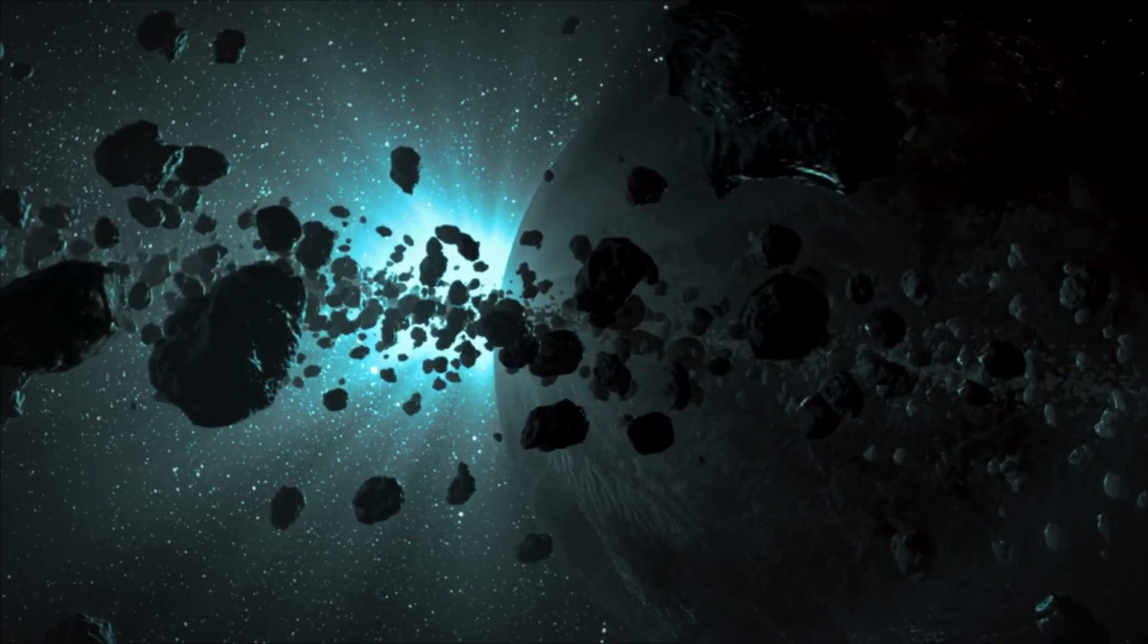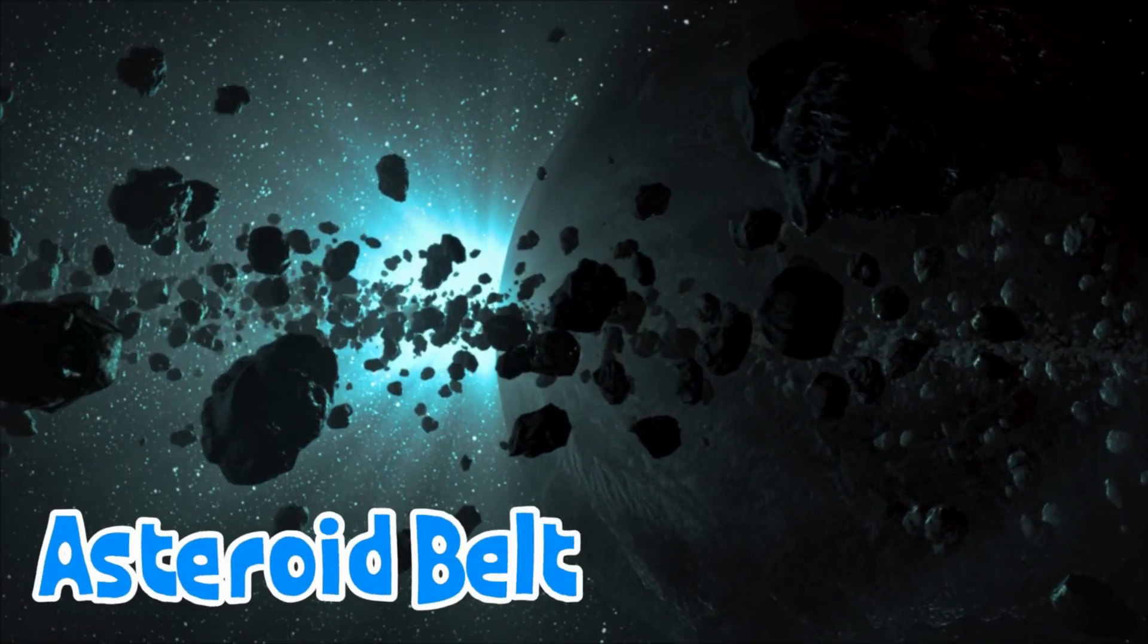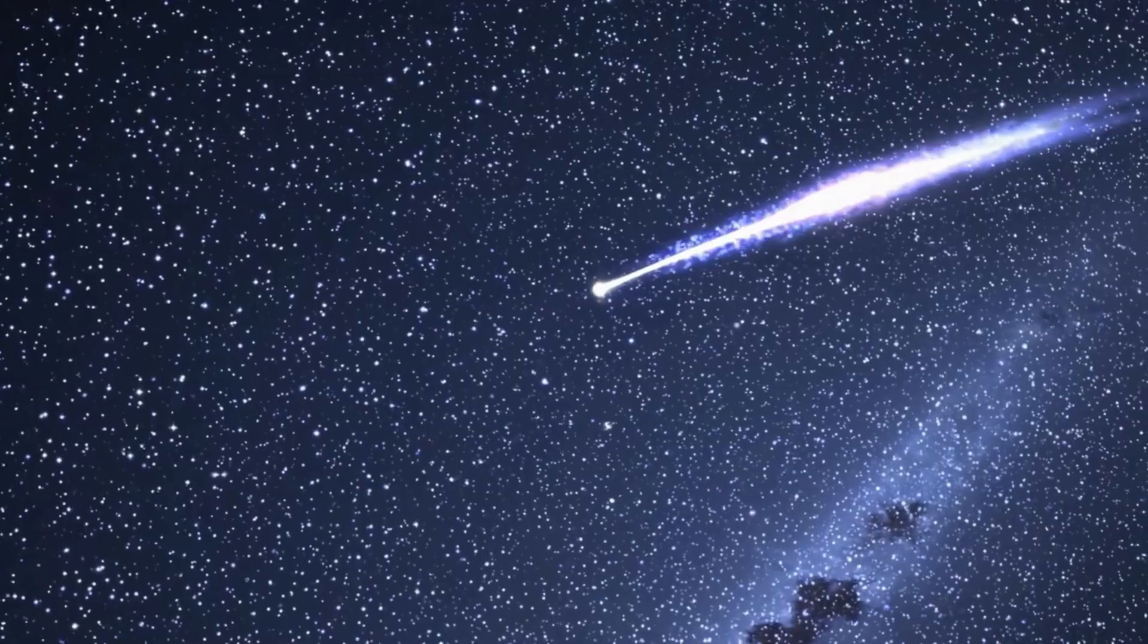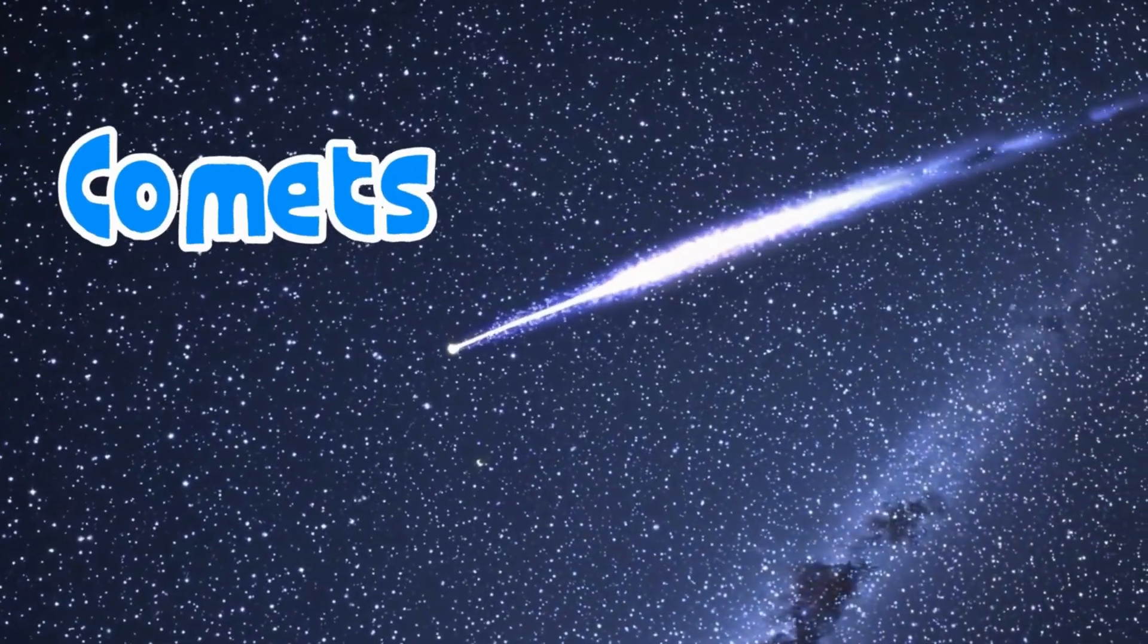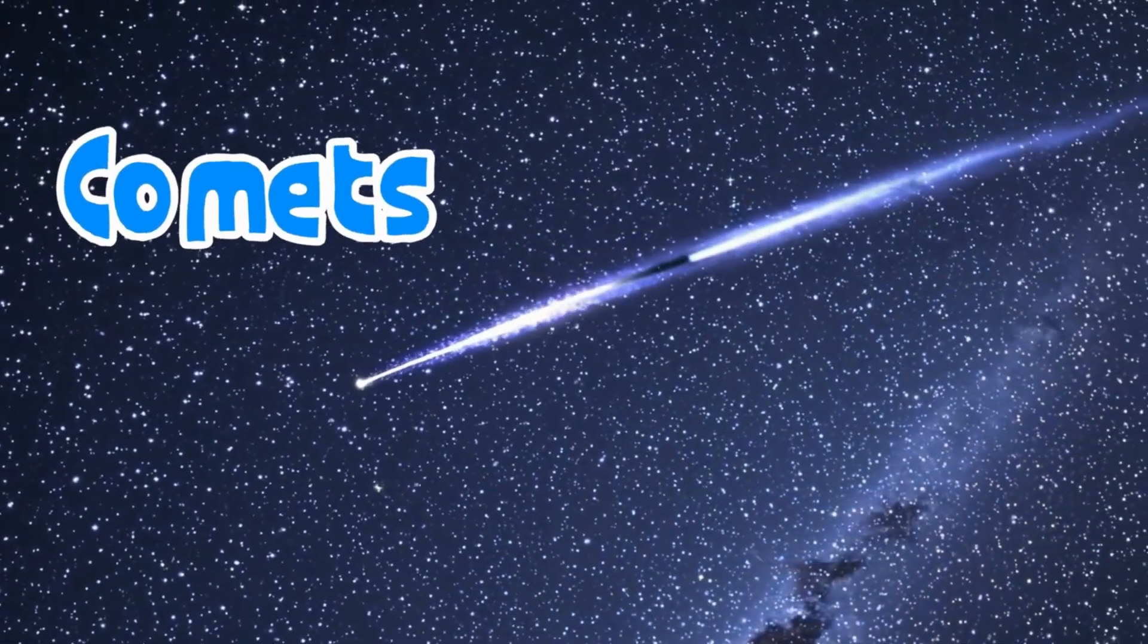Between Mars and Jupiter is the asteroid belt, filled with rocky objects. Farther out are comets, made of ice and dust. They grow tails when they get close to the sun.